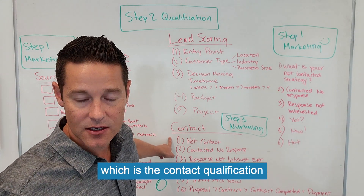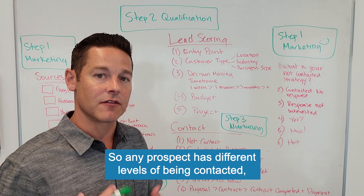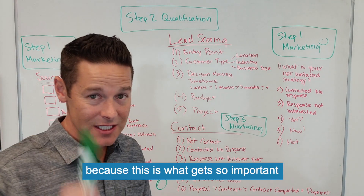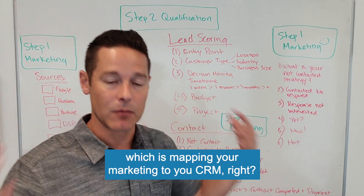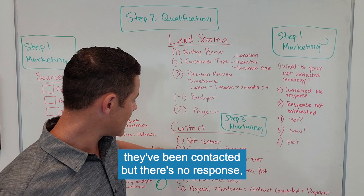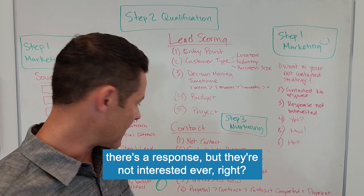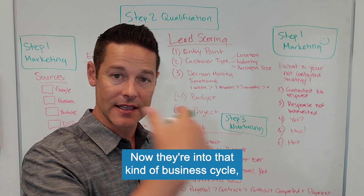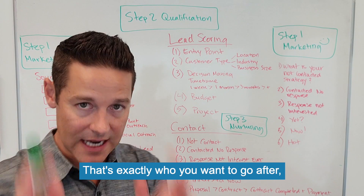It also gets into what is super important: the contact qualification and contact phase. Any prospect has different levels of being contacted, and it's important to map this because it feeds into mapping your marketing to your CRM. Either they've not been contacted, they've been contacted with no response, there's a response but they're not ever interested, or there's a response and they're not interested yet — which actually qualifies them, meaning they're now in the business cycle and potentially interested.